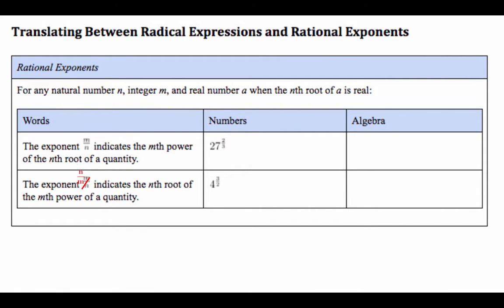So the idea behind this is that when you have an exponent m over n, whatever is the numerator is the power, as we've known in the past, and what's in the denominator is the nth root of a quantity. So in this case, this would be three in the denominator, so it would be cube root with square. So you express that as cube root of 27 squared.